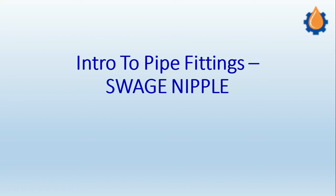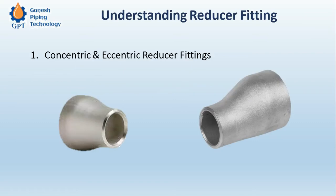To understand the swage nipple, we first have to understand what a pipe reducer is. If there is a pipe having a size of say 6 inch and we want to reduce the diameter to say 3 inch, we have to use a fitting called a reducer. Here you can see images of a reducer. There are basically two types: one is the concentric reducer and the other is the eccentric reducer.